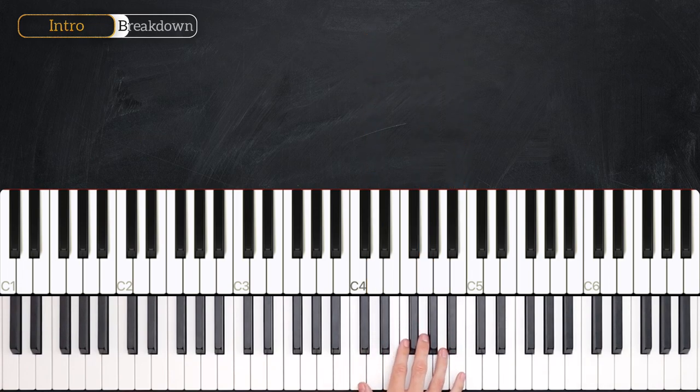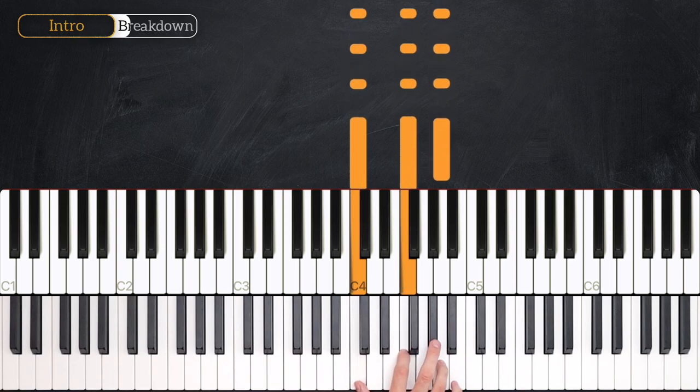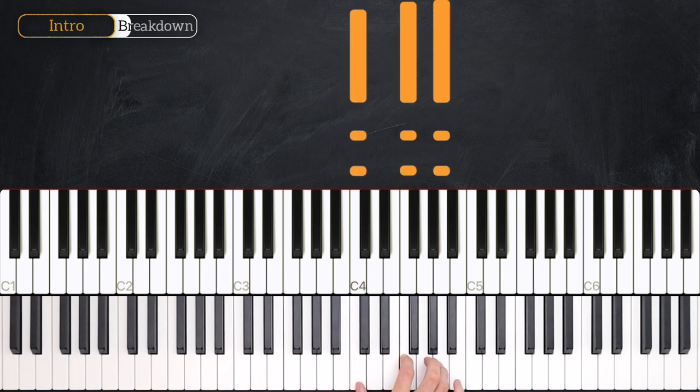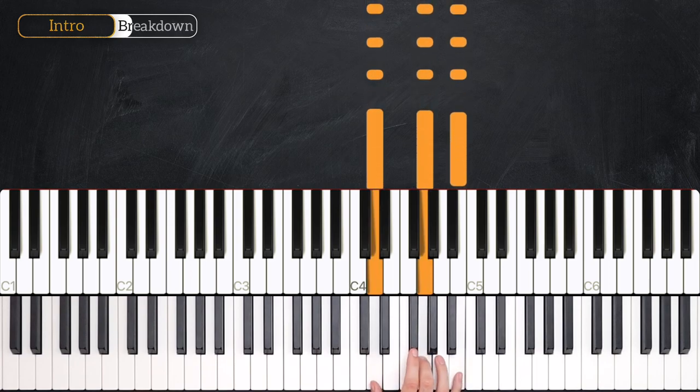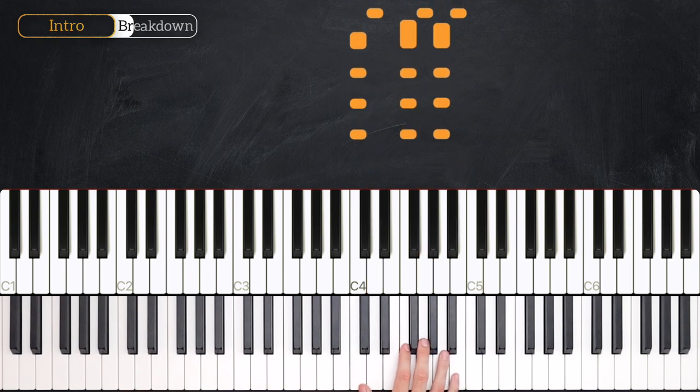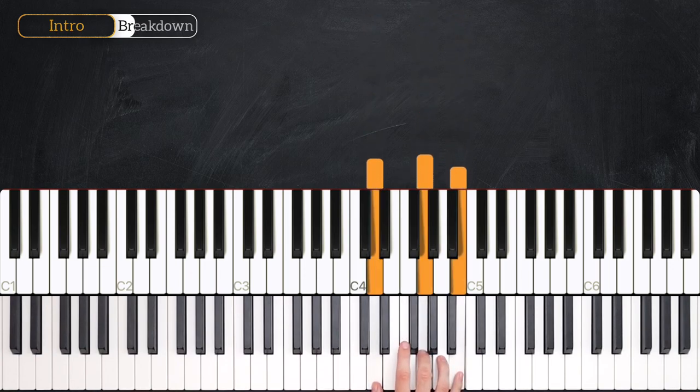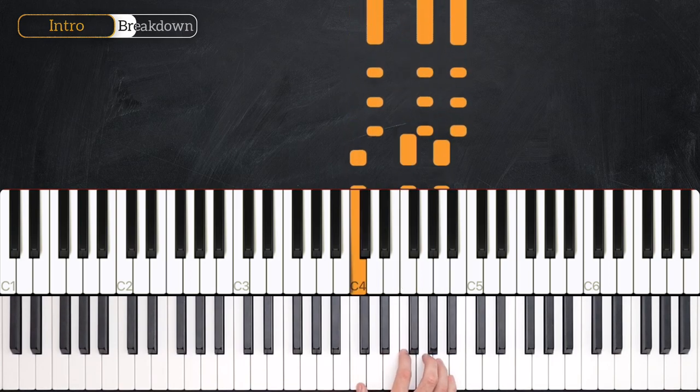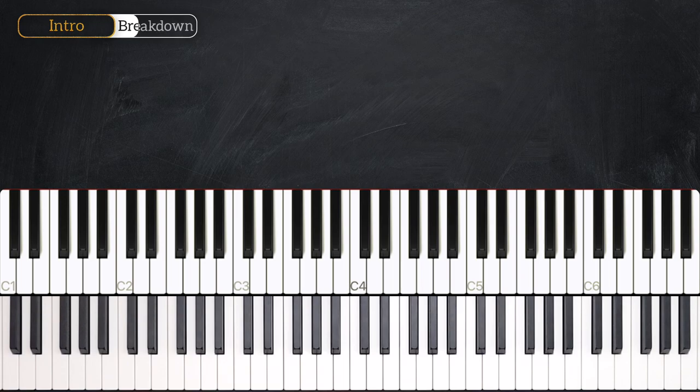So if you notice there, I actually used some very particular fingering when I was playing these two different chords. So on the F major I'm doing one, two, four, but on the G major I'm doing one, three, five. And the reason is, it gives you a really nice smooth legato movement from one chord to the next.